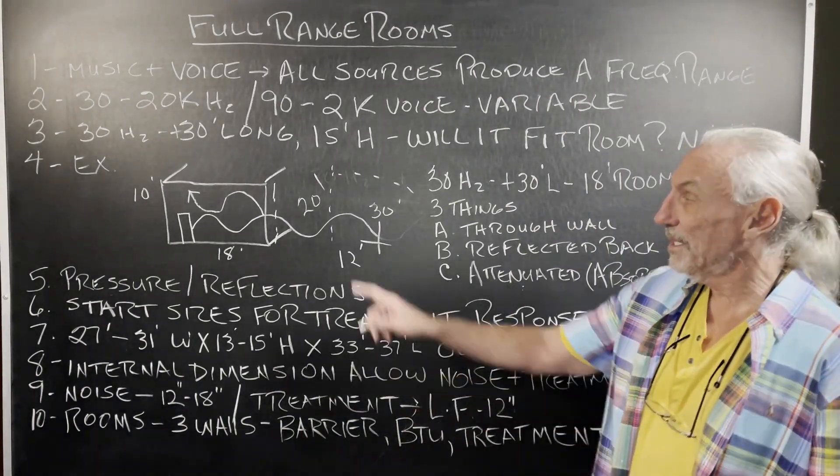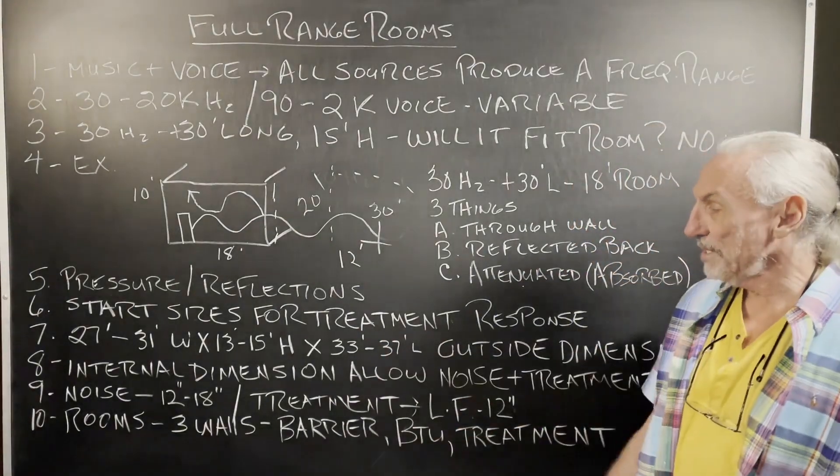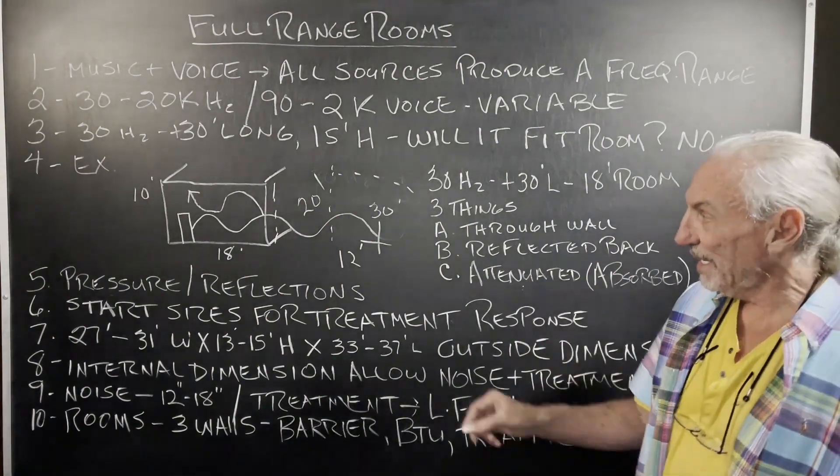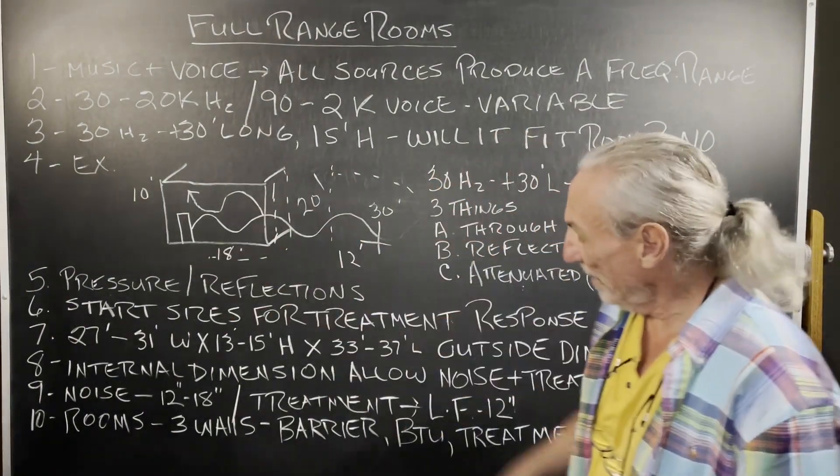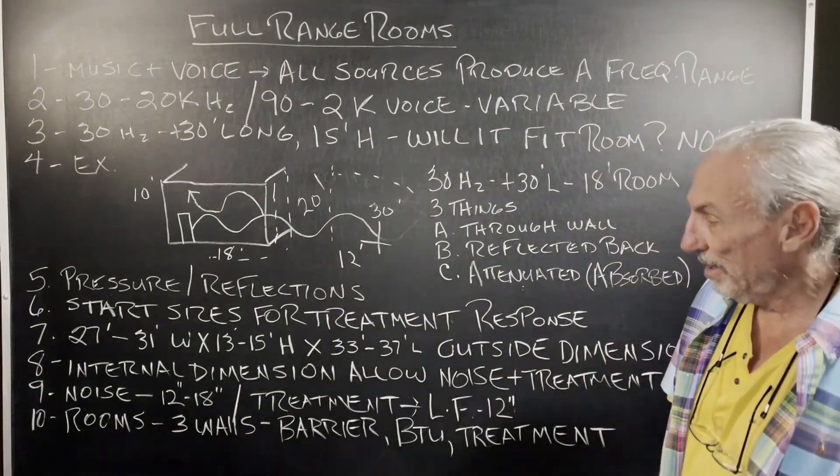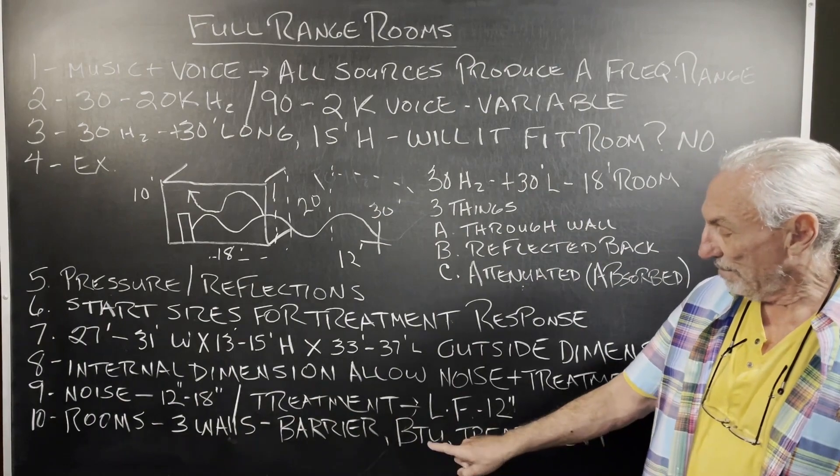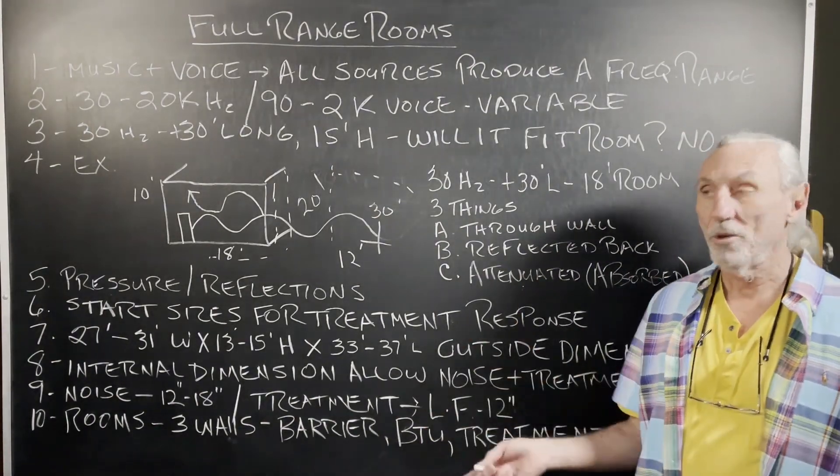Also you have to realize that in our room, we have three walls. That's OD dimensions that I gave you. That's outside. But there's an inside dimension. So, we have OD out here. And then what do we have inside those walls? Well, we have three walls. Barrier. BTU, we call it. And treatment.